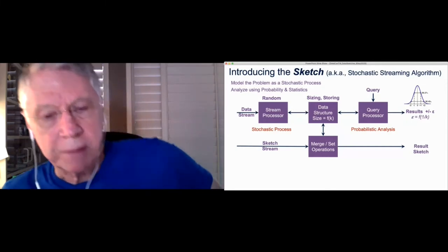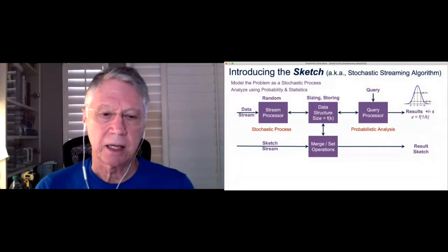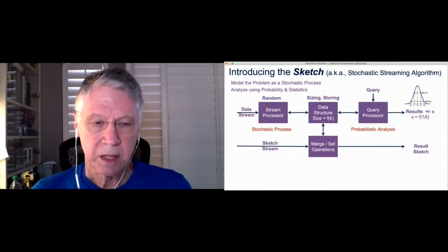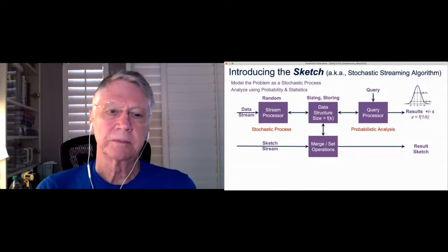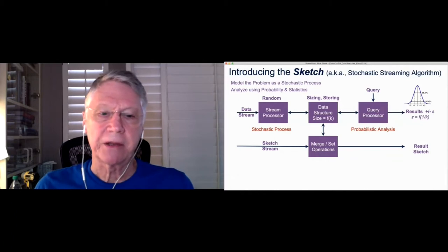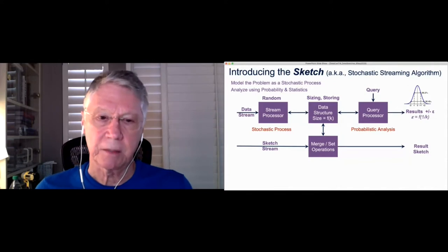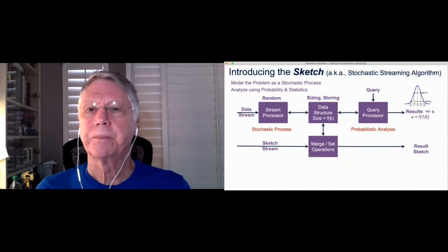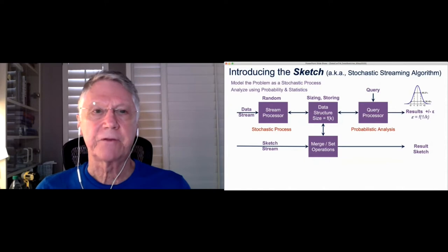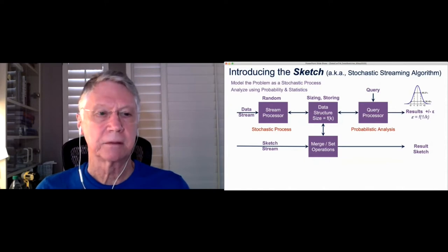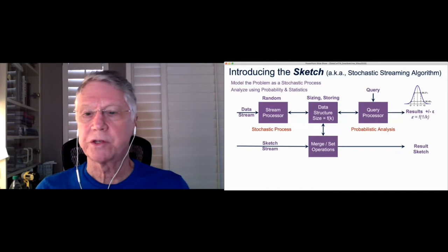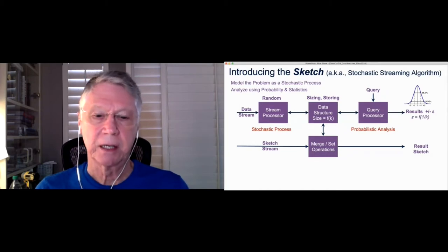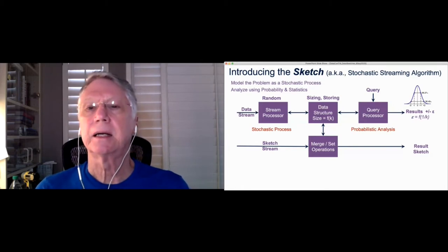Where the stream coming in is a stream of sketches, actually, completed sketches that have been analyzed before. And you're able to merge these together in a linear fashion. And so now the result sketch that comes from this process is the same as if you had merged all the data into one stream and into a single sketch. And so you don't lose any accuracy, particularly for union-type merge operations in this process.